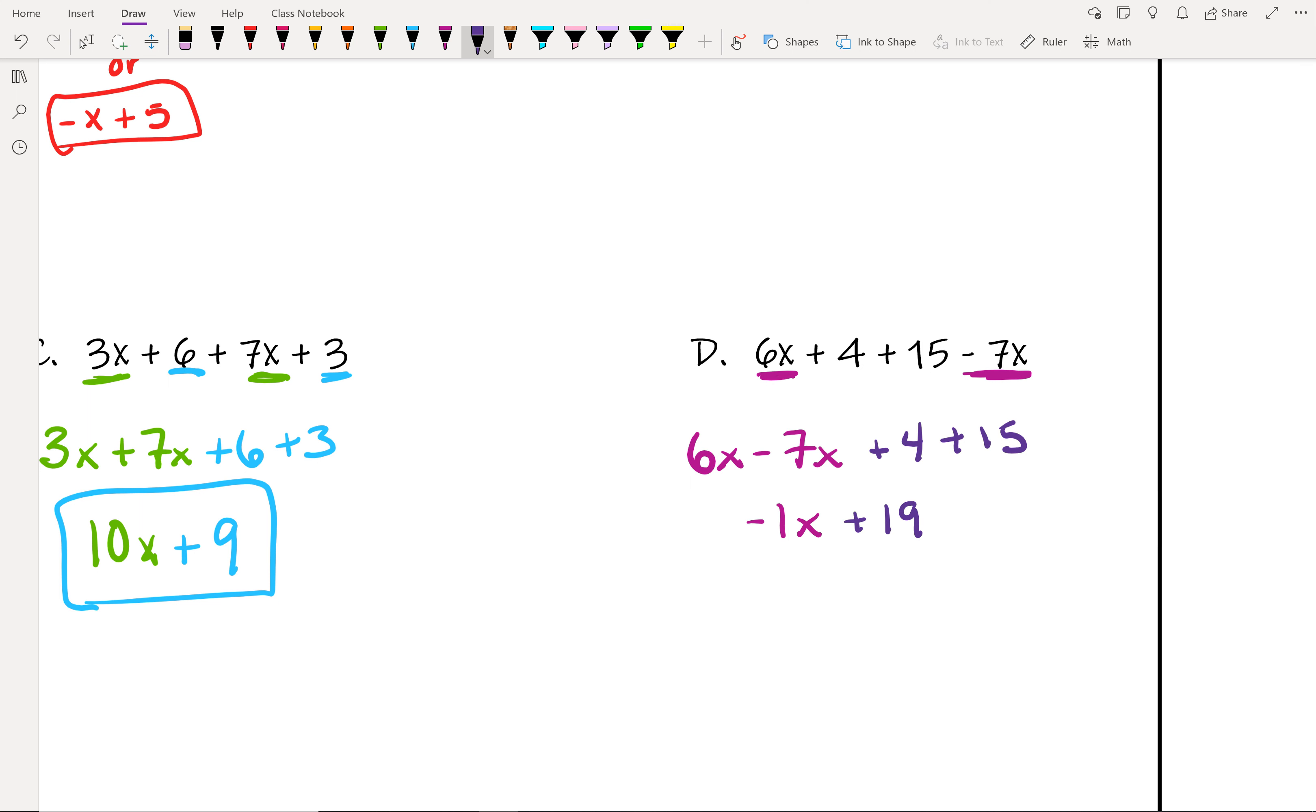So if you wrote negative 1x plus 19 is your answer, that is perfectly fine. But if you remember from the first example, this is also just negative x plus 19. This, if you're given multiple choice questions, is more likely what you will see as your option. So knowing that that is the same as negative 1x will be really important.